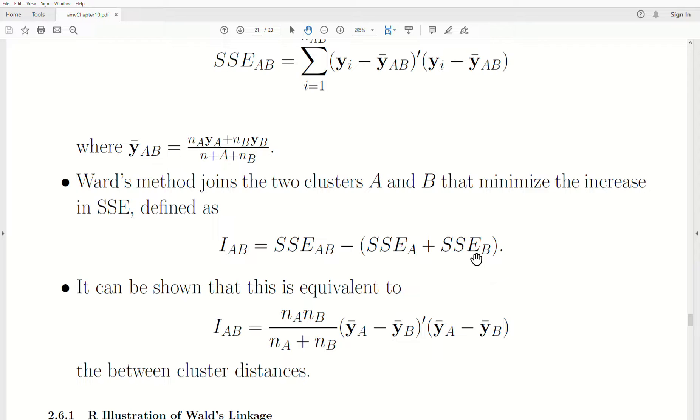But then when we join those two clusters, they get a little bit bigger, the sum of squares within. We want to minimize that increase of what gets bigger. And that's actually what Ward's method does, minimize that increase.